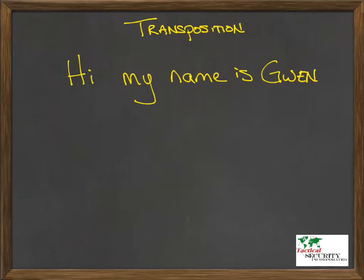One of those really basic concepts inside cryptography throughout history and still today is the concept of transposition. Transposition is actually really simple. All we're going to do is keep all the same letters — we could be working on words or bits, but here we'll do letters — and literally what's going to happen is we're going to alter the order of those letters.